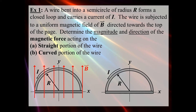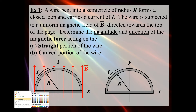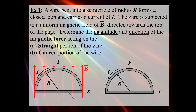A wire is bent into a semicircle with a radius of capital R. It forms a closed loop and carries a current of I, which is counterclockwise. The wire is subjected to a uniform magnetic field B directed towards the top of the page. We want to determine the magnitude and direction of the magnetic force acting on the straight portion of the wire and also on the curved segment. We'll break up the problem into two parts: we'll call the straight part wire number one and the curved segment wire number two.